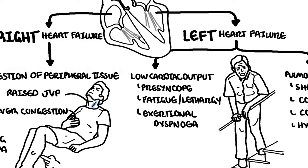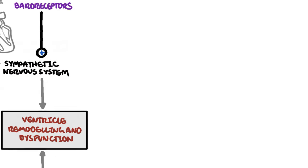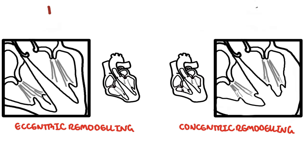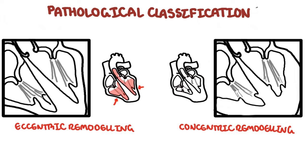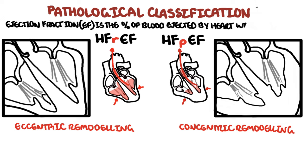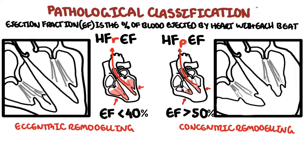Ventricular muscle remodeling, hypertrophy, and subsequent dysfunction are characteristic of heart failure. There are two broad remodeling processes: eccentric remodeling and concentric remodeling. This typically results in the pathological classification of heart failure, with eccentric remodeling typically causing heart failure with reduced ejection fraction (HFrEF) and concentric remodeling typically causing heart failure with preserved ejection fraction (HFpEF). Ejection fraction is the percentage of blood volume ejected by the heart with each beat – HFrEF is less than 40%, which is previously known as systolic heart failure because there is a problem with pumping.